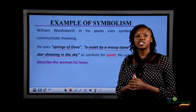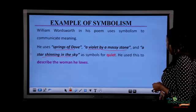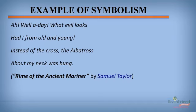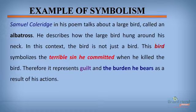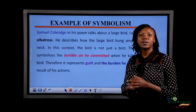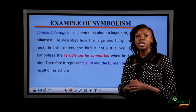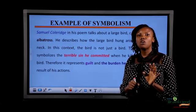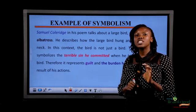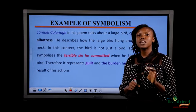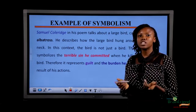Now let's take a look at another example. Example 2: 'Ah, well-a-day, what evil looks had I from old and young. Instead of the cross, the albatross about my neck was hung.' — Rime of the Ancient Mariner by Samuel Taylor Coleridge. In this poem, he talks about a bird called the albatross. He uses the albatross to symbolize a terrible sin he had committed, and also guilt.